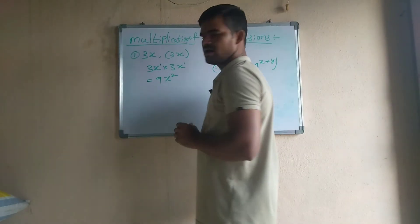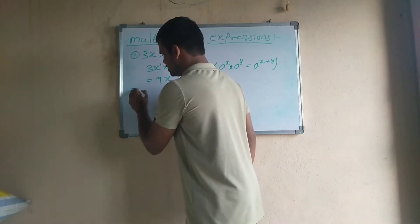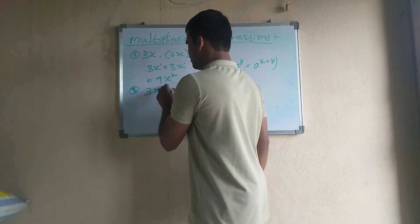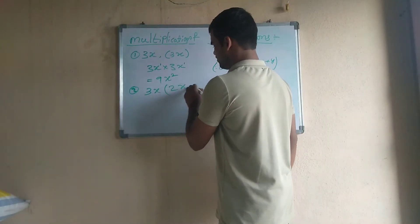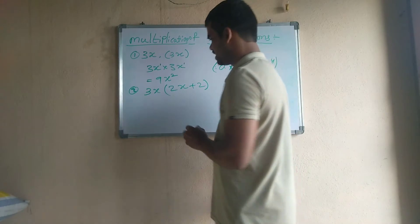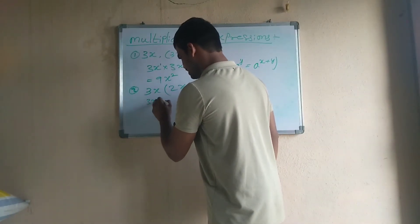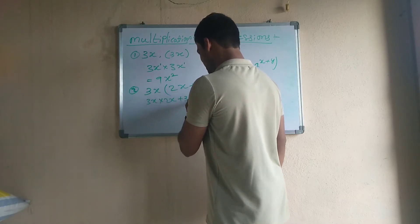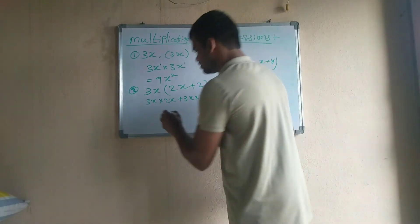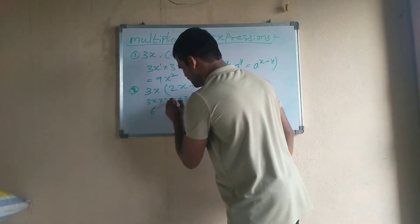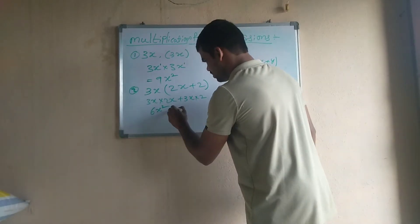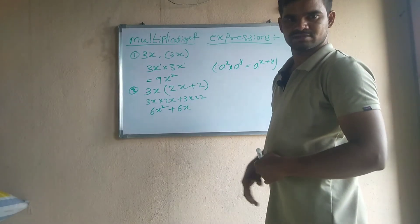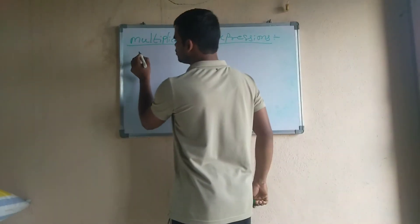Now we have the second one — I'm just multiplying a monomial with a binomial. So I'm writing 3x into (2x + 2). We get 3 times 2 is 6, x to the power 1 times x to the power 1 is x squared, plus 3 times 2 is 6x. So the answer is 6x squared plus 6x.